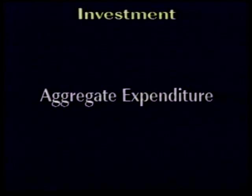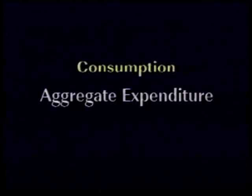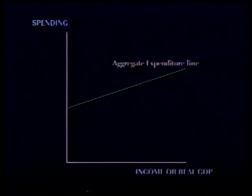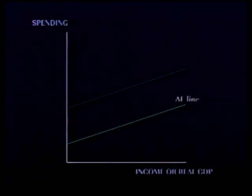Investment, net exports, and consumption are all parts of aggregate expenditure. Therefore, when interest rates go up, the aggregate expenditure line, or AE line, moves downward. When aggregate expenditure goes down, real GDP goes down as well.